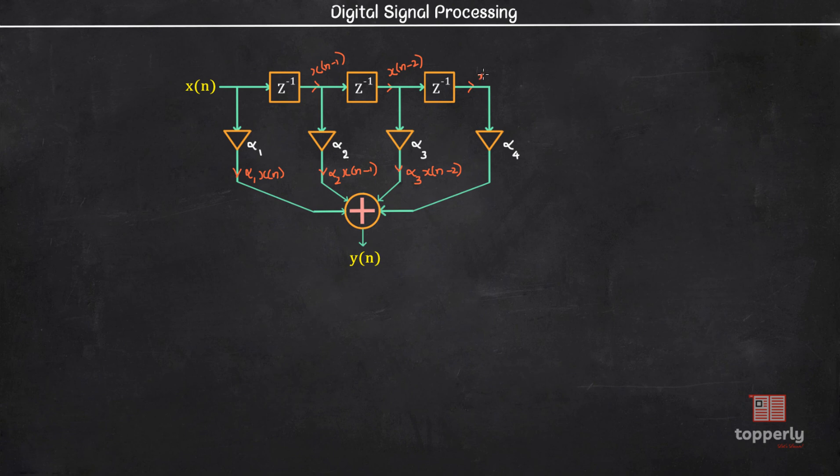Finally, here we have x of n minus 2 due to this unit delay and here we have alpha 4 into x of n minus 3 due to this scalar multiplier. Now finally, all these inputs are fed to an adder circuit. And as we learned, an adder circuit adds up all the inputs to it. So the final output y of n is y of n equal to alpha 1 of x of n plus alpha 2 of x of n minus 1 plus alpha 3 of x of n minus 2 plus alpha 4 of x of n minus 3. So this is the expression for the discrete sequence y of n.